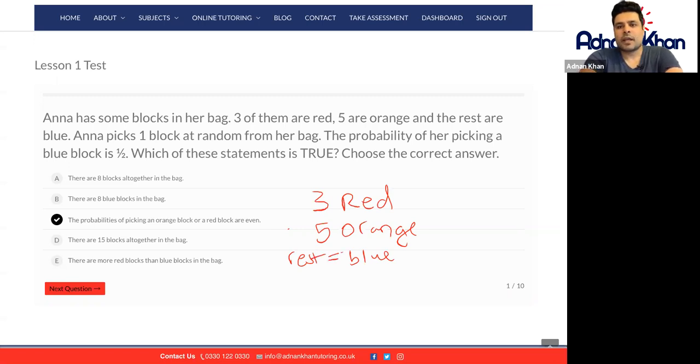The question says the probability of her picking a blue block is a half. That means altogether the red and orange blocks add up to eight blocks. Eight blocks altogether.